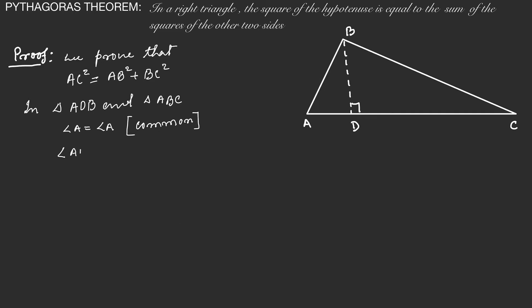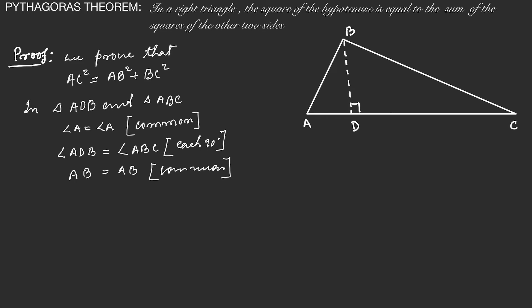Angle ADB is equal to angle ABC, and both equal 90 degrees. So by Angle-Side-Angle, therefore triangle ADB is similar to triangle ABC.